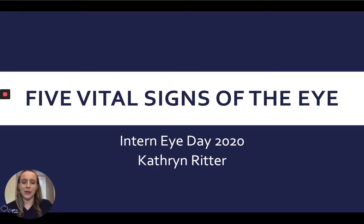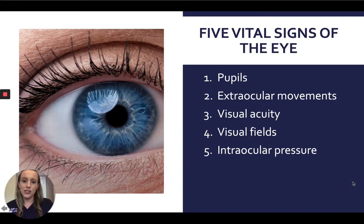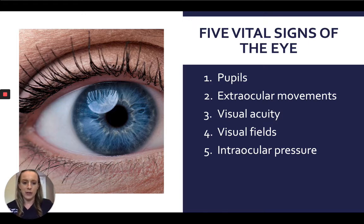Today we are going to be talking about the five vital signs of the eye. This is important information since it's what you'll want to relay to your ophthalmology colleagues when talking to them about a patient on the phone, and it will also come up during our Tuesday case conferences. The five vital signs are pupils, extraocular movements, visual acuity, visual fields, and intraocular pressure. We'll go through all of these in more detail right now.